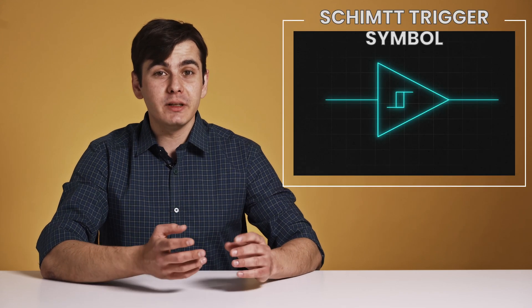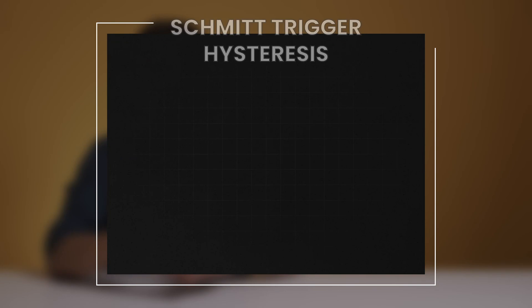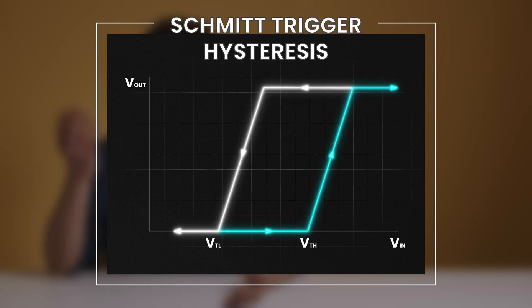And this is achieved with a Schmitt trigger. The Schmitt trigger compares the output of the differential amplifier with a reference point. When the amplifier output exceeds this point, the Schmitt trigger turns on. And when it falls below, the Schmitt trigger turns off.